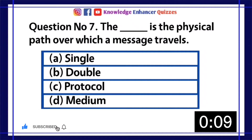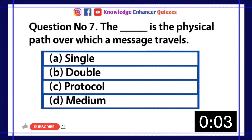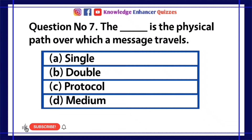Question number 7: The dash is the physical path over which a message travels. A. Single. B. Double. C. Protocol. D. Medium. Option D is the right answer.